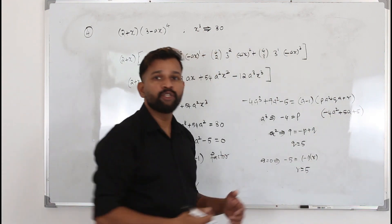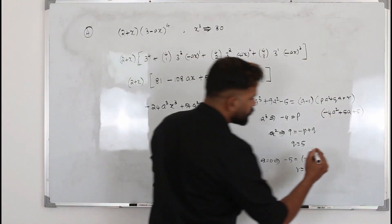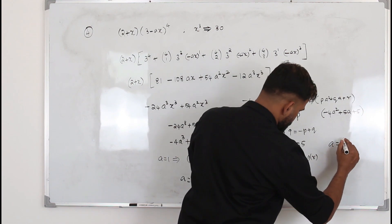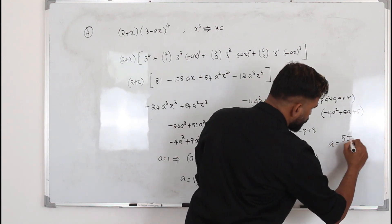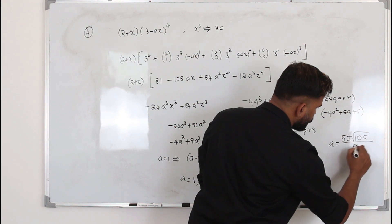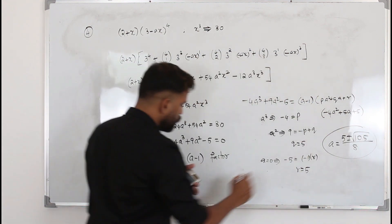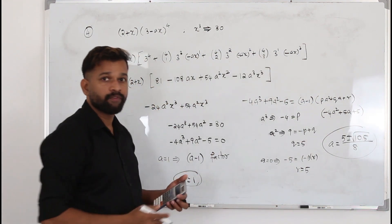I'll solve this. You get two other a values. So the two a values are a = (5 ± √105)/8. So we got two values here, and here one value, total of three values.